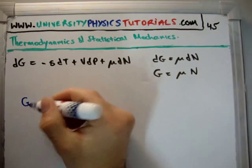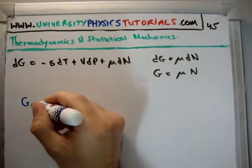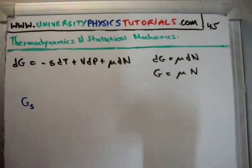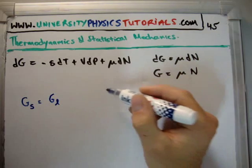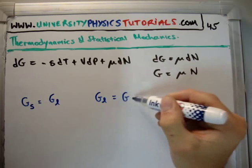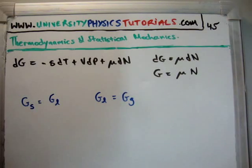So for example on a solid liquid phase boundary we should have the Gibbs free energy of the solid equal to the Gibbs free energy of the liquid. Or the Gibbs free energy of a liquid is equal to the Gibbs free energy of the gas at the liquid gas phase boundary.